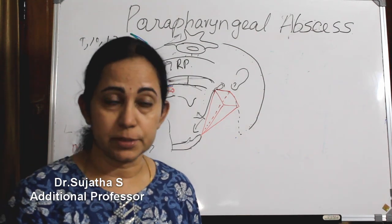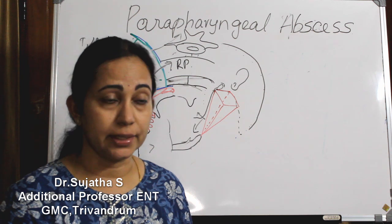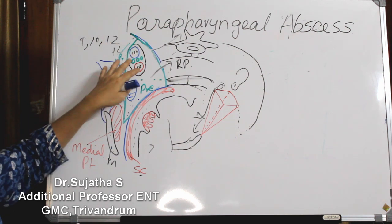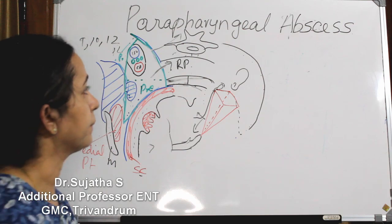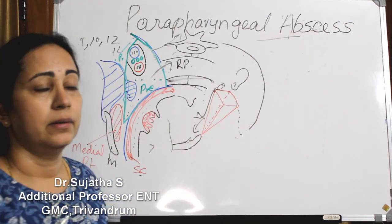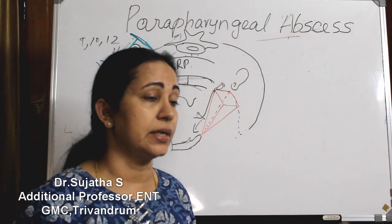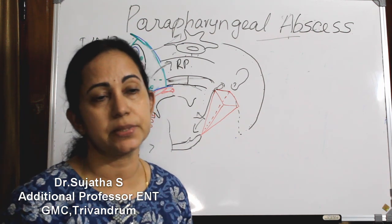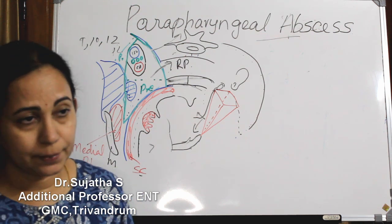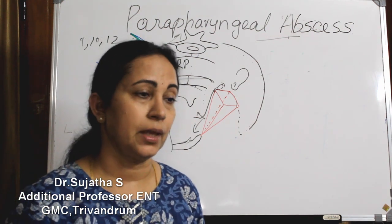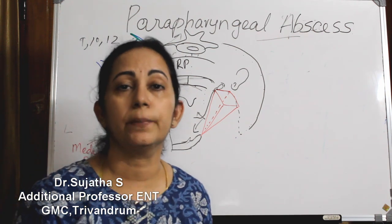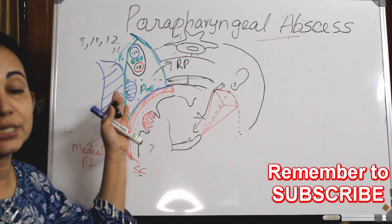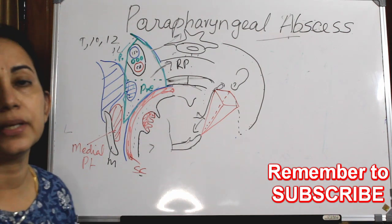A collection of pus inside the parapharyngeal space is called a parapharyngeal abscess. This is a very serious, potentially fatal medical condition requiring prompt diagnosis and treatment. Failure to treat properly risks losing the patient. This is also important for theory examinations as it can be asked as a structured essay question.